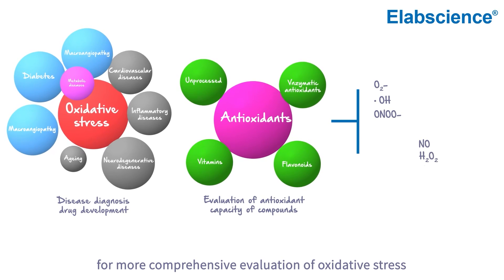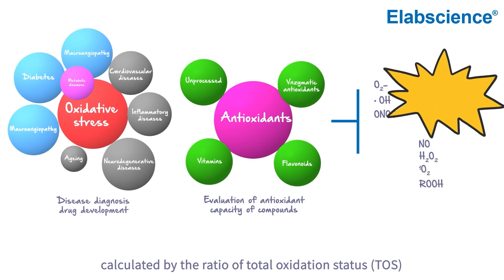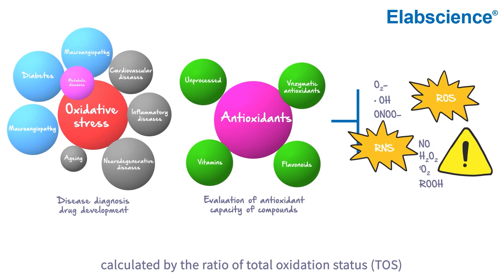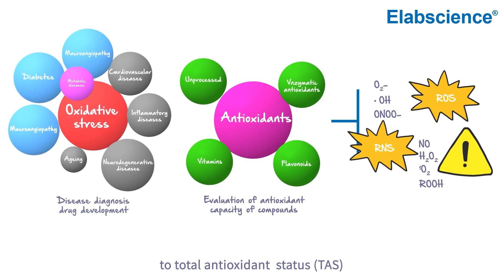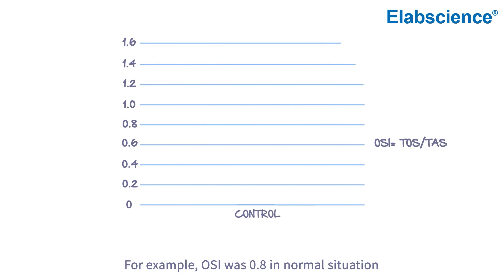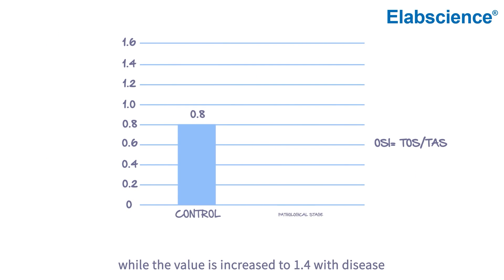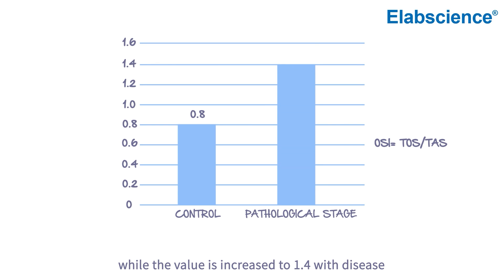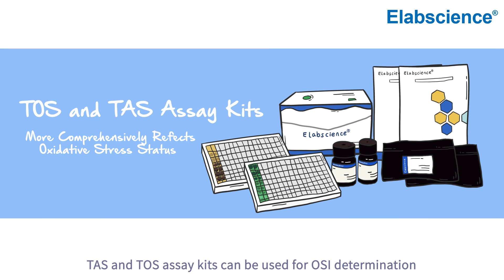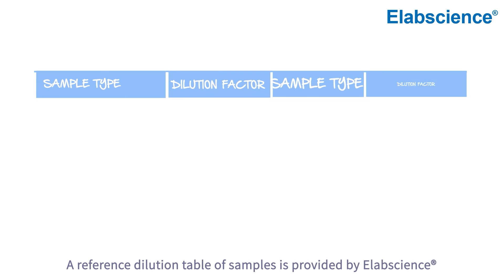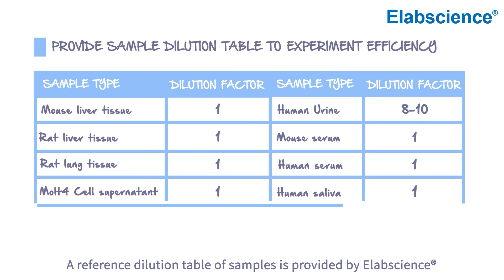The Oxidative Stress Index (OSI) is a marker for more comprehensive evaluation of oxidative stress, calculated by the ratio of Total Oxidation Status (TOS) to Total Anti-Oxidation Status (TAS). For example, OSI was 0.8 in a normal situation, while the value increased to 1.4. TAS and TOS kits can be used for OSI determination, and a reference dilution table of samples is provided.